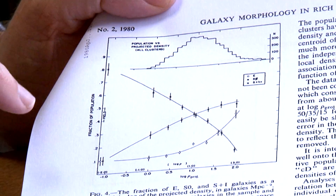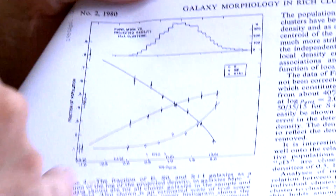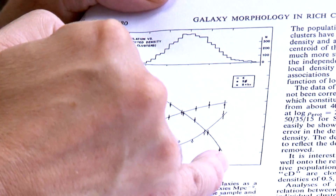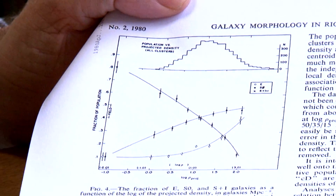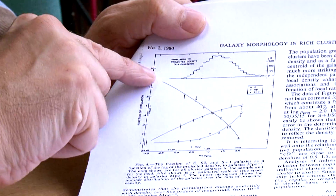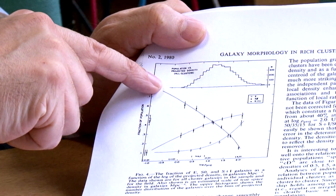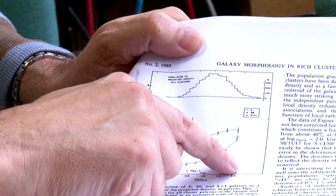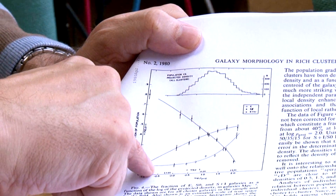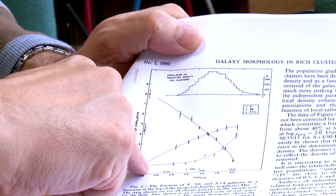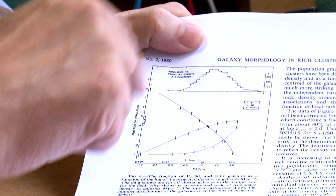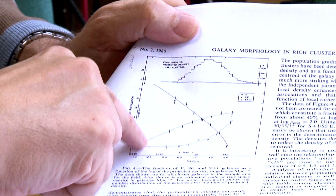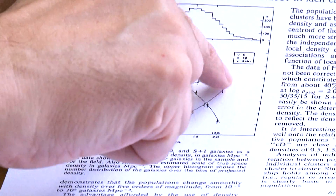This chart shows the fraction of the population in different galaxy types as a function of environmental density. At one end you're looking where there are very few galaxies; at the other end you're in the middle of a rich cluster with tons of galaxies. Spiral galaxies are the majority — about 80% of big bright galaxies in low-density fields. But when you go into clusters, there are very few spiral galaxies. Elliptical galaxies are rare in the field but increase significantly in dense clusters. And these are the S0 lenticular galaxies — few in the field, but lots and lots of them in the middle of a cluster.